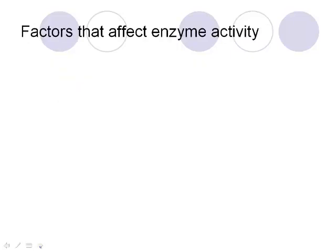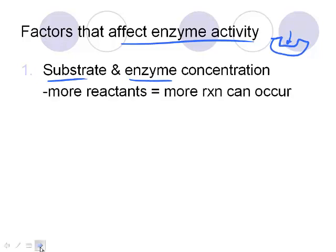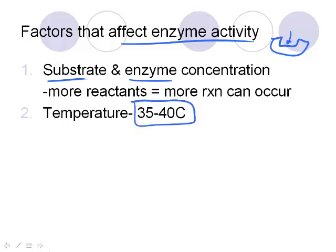There are lots of factors that affect enzyme activity. The first big one is substrate concentration — if you don't have a lot of reactants, the reaction is not going to happen as fast. Same thing if you don't have a lot of enzyme around, it's not going to react as quickly. More reactants means more reactions can occur. Next is temperature — our enzymes in the body want to be about 35 to 40 degrees.